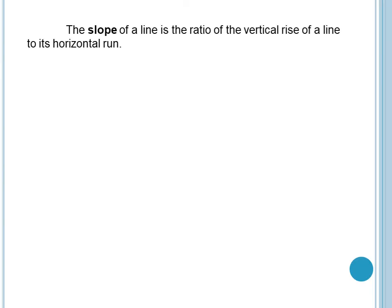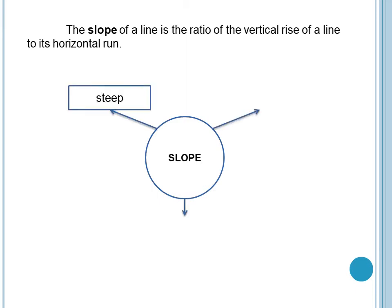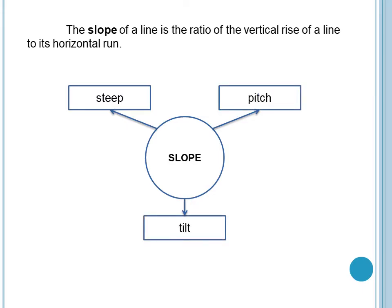The slope of a line is the ratio of the vertical rise of a line to its horizontal run. The word slope means steep, pitch, tilt. So these are the words related to slope. Or in Tagalog, pag sinabi nating slope, ito ay kung gaano katarik ang isang bagay o isang lugar.